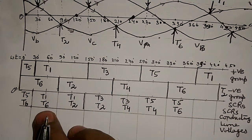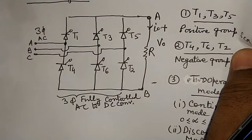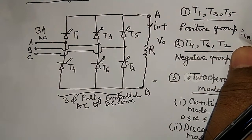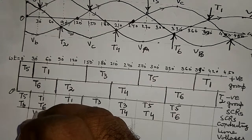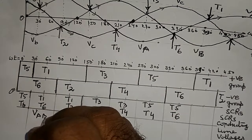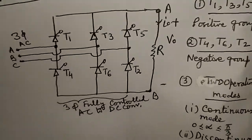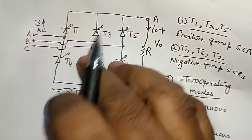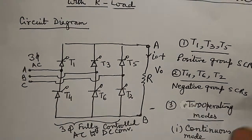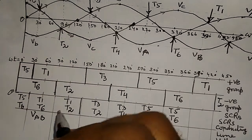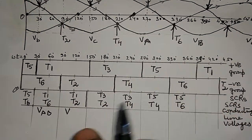Looking at the circuit diagram: T1 is connected to the A line and T6 is connected to the B line. Therefore, when T1 and T6 conduct, they form line voltage VAB. From 90° to 150°, T1 and T2 are conducting. T1 is connected to the A line and T2 is connected to the C line. Therefore, the conduction of T1 and T2 produces line voltage VAC.